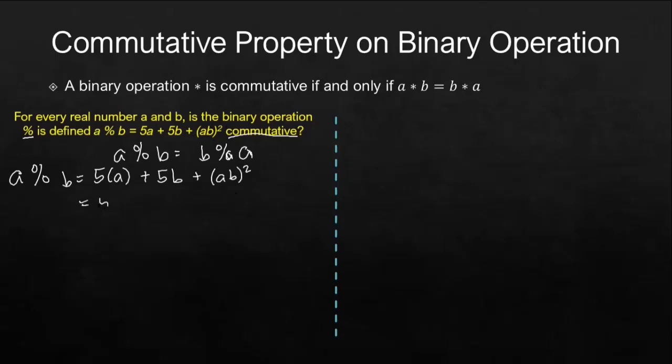5 times a is 5a. This is 5 times b or 5b. And using the laws of exponents, this will be a squared b squared. So this is our answer for a percent b.